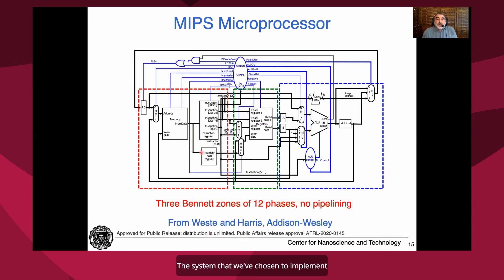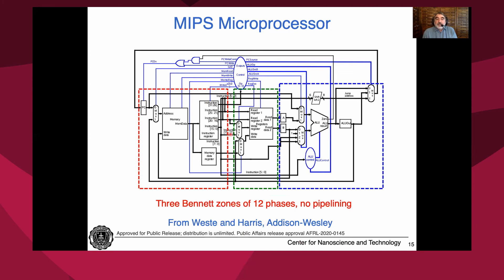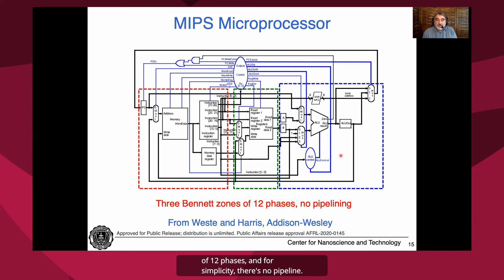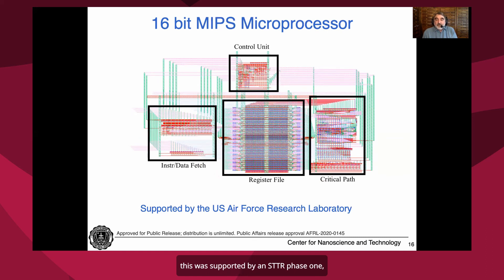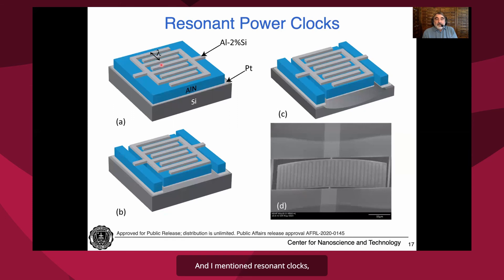The system we've chosen to implement is a MIPS microprocessor based on the mini-MIPS from Weste and Harris. We implement it using three Bennett zones of 12 phases, and for simplicity there's no pipelining. This is a plot of the layout we implemented. This was supported by an STTR Phase 1 from the U.S. Air Force Research Laboratory, and we are currently preparing this for fabrication under an STTR Phase 2. We are also doing work on resonant clocks using contour resonators with aluminum nitride.